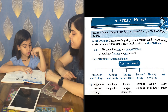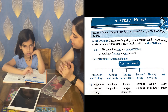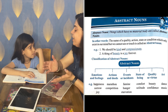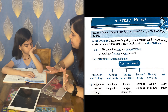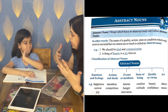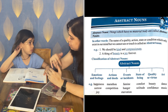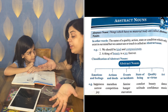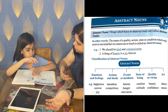Emotions ke examples hain: happiness, sadness. Actions ke examples mein cycling — hum use touch or feel kar saktay hain mentally. Deed ka example: compassion — yee humara action hai. Events or incidents ka example: hunger — that is a state of being. For instance, if I am comfortable, that is also an abstract noun — a state of being that exists in our mind.